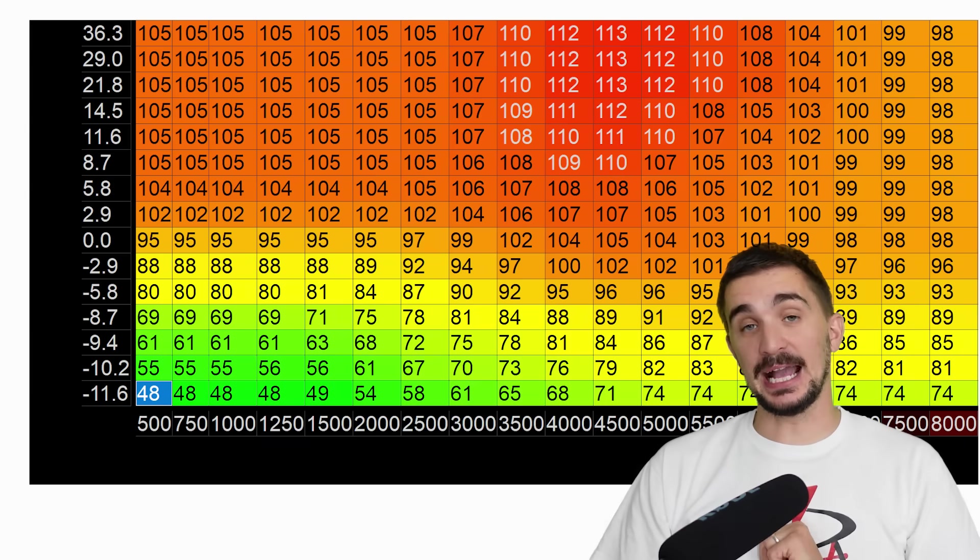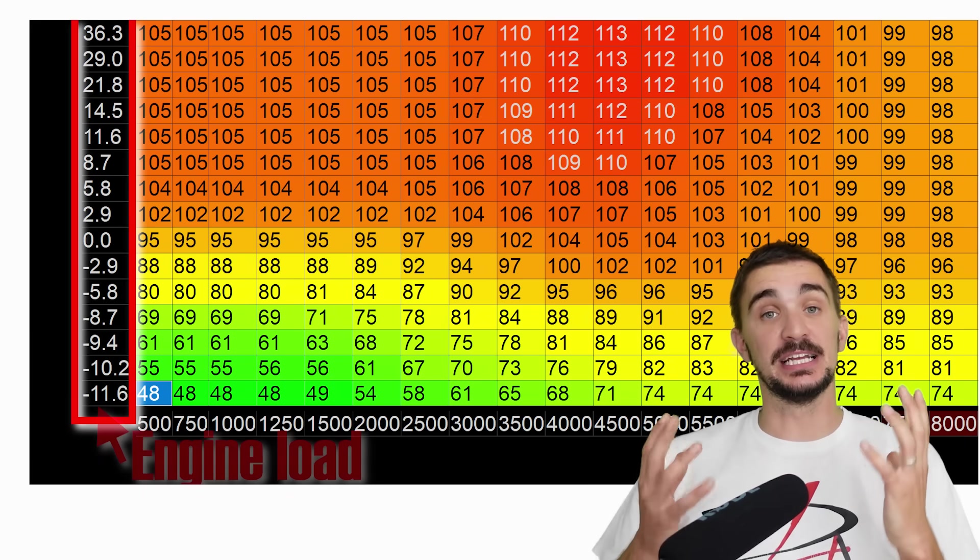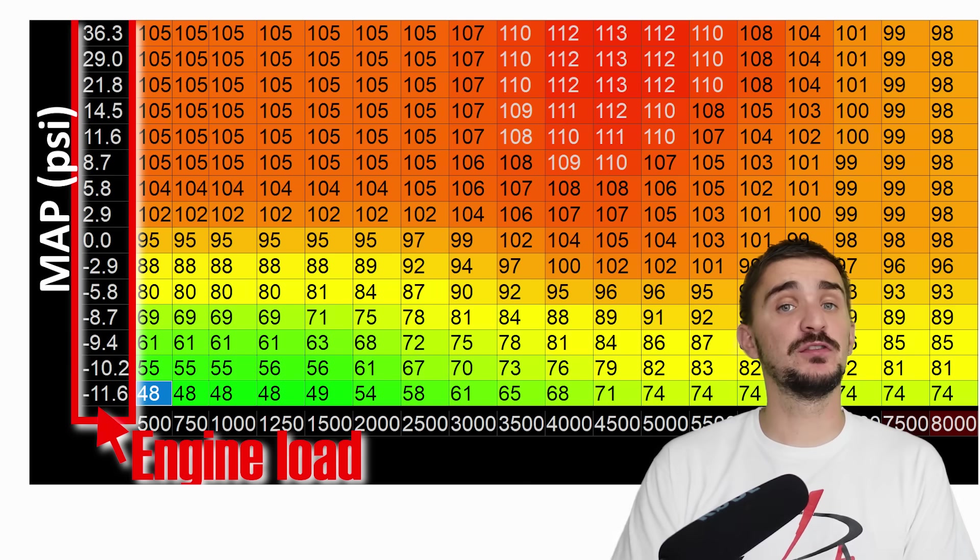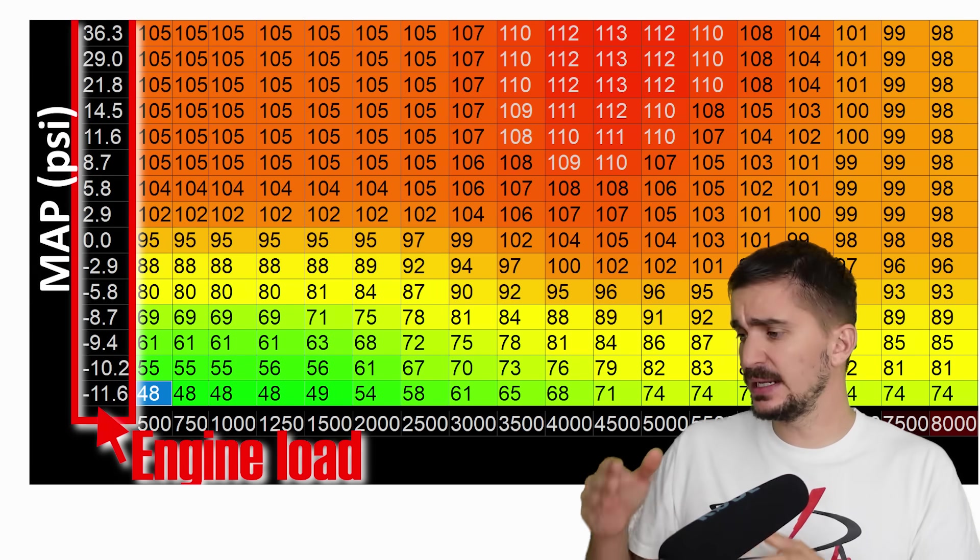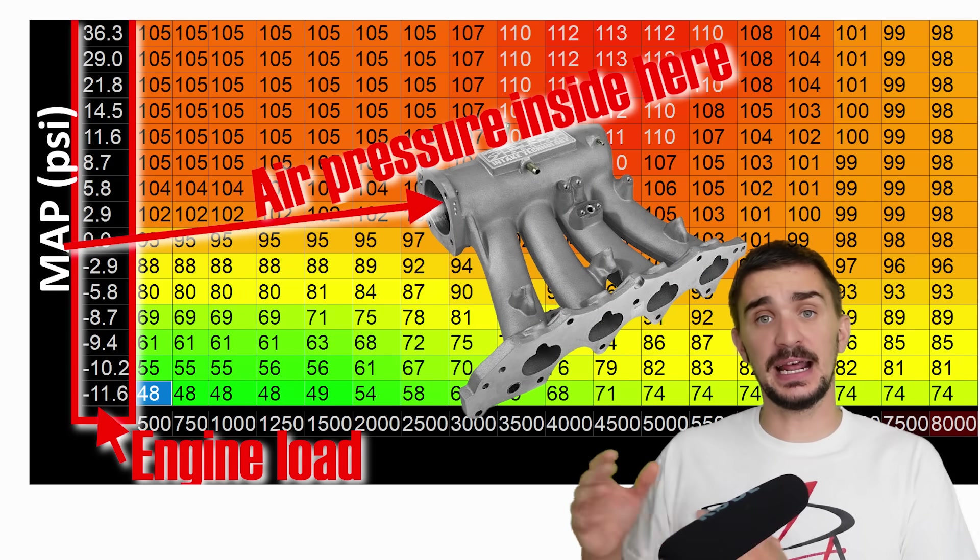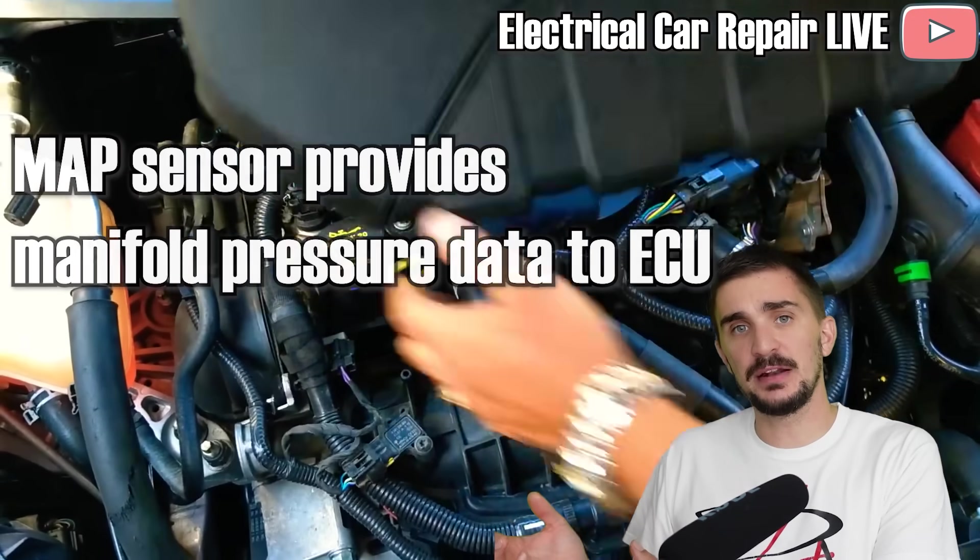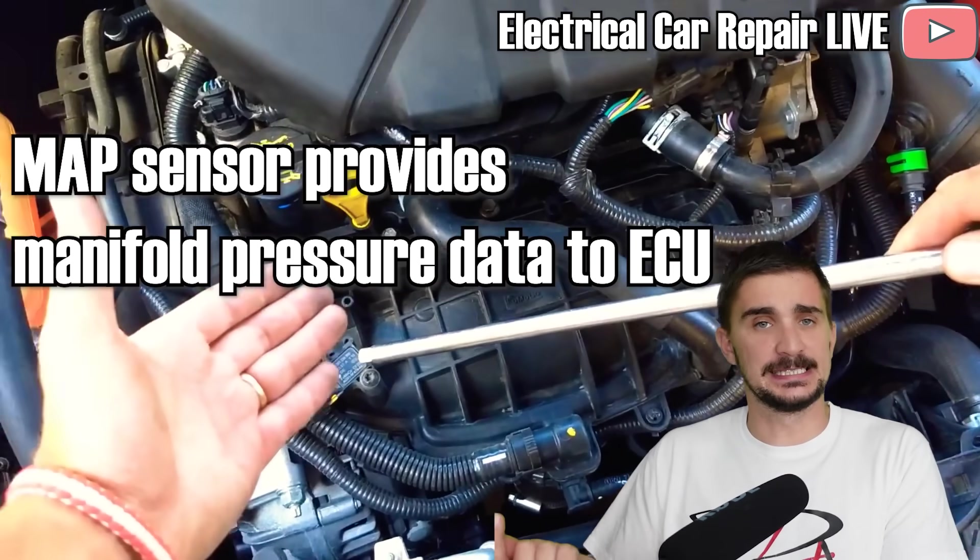A VE map has two axes. Our vertical axis is engine load. In most cases, engine load is represented by MAP or manifold absolute pressure. It is simply the air pressure inside your intake manifold. This data comes to the ECU from the MAP sensor, which is located somewhere on your intake manifold, and it measures the pressure inside it.